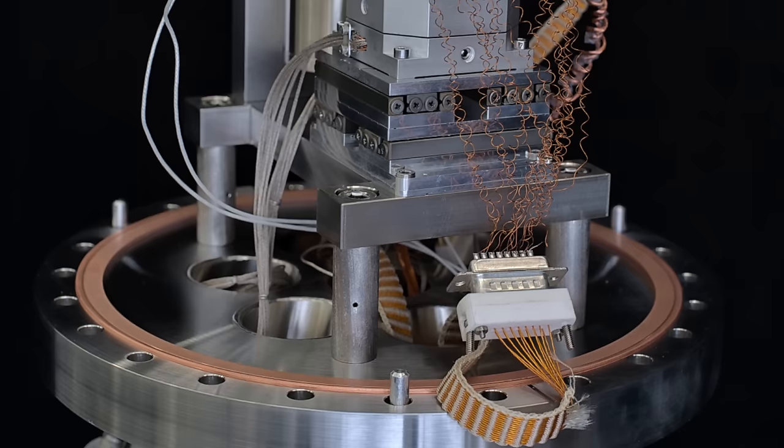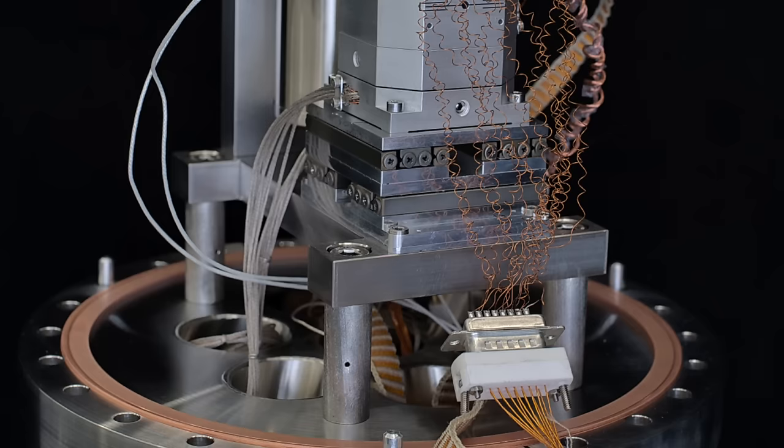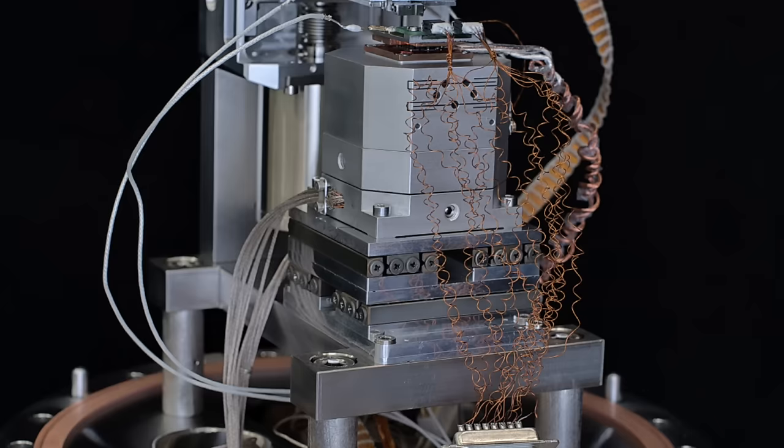Here you can see our scanning thermal microscope, as it looks like when it's outside the vacuum chamber. So down here we have the bottom flange with all the feed-throughs for electrical signals and the optical laser beam.